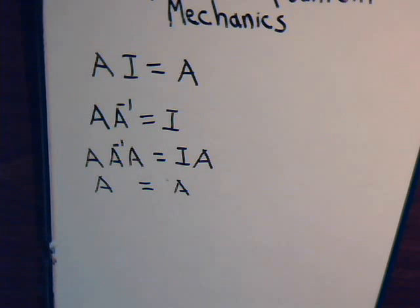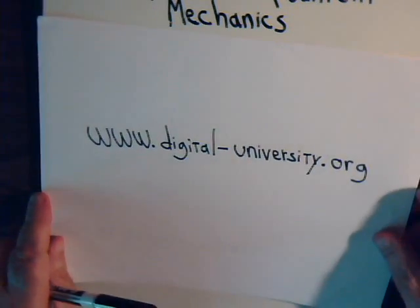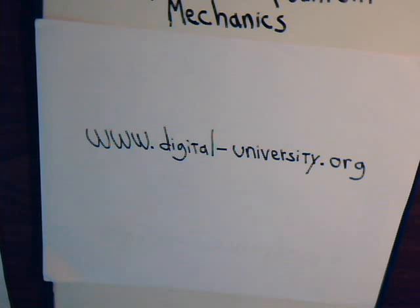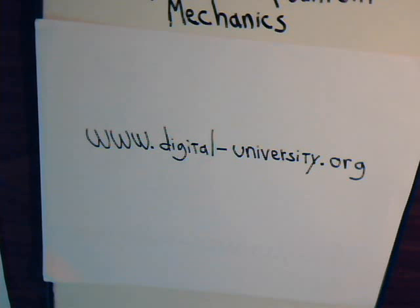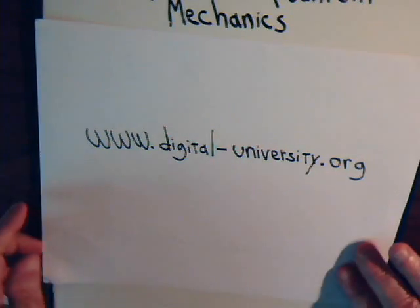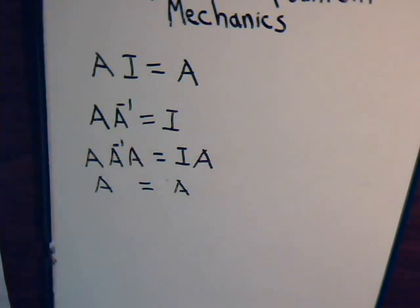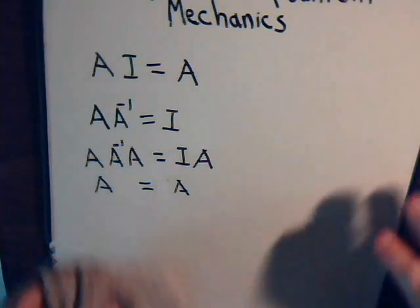Now, if you have a matrix A, how do you find its inverse? You can go to the website at digital-university.org and look at videos 10 and 11, where we give the background on what characteristics matrix A needs in order to possess an inverse, and we show the procedure with an example of how to find the inverse of a matrix. Here in this video, we're going to talk about the inverse of a particular type of operator.